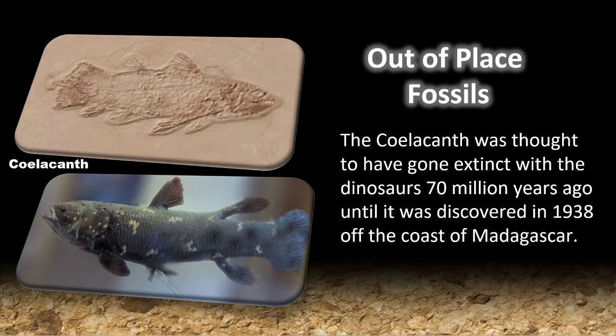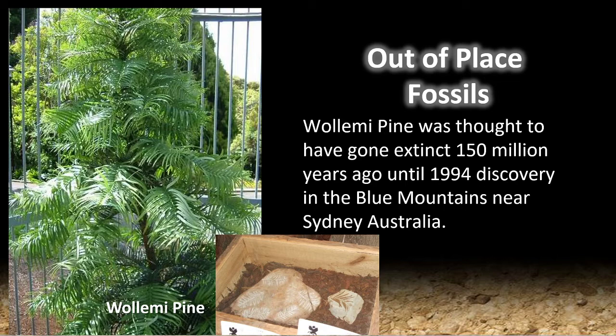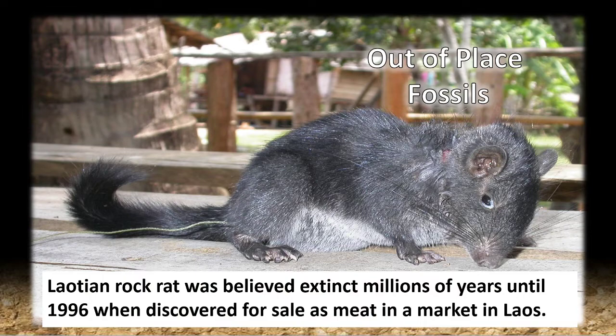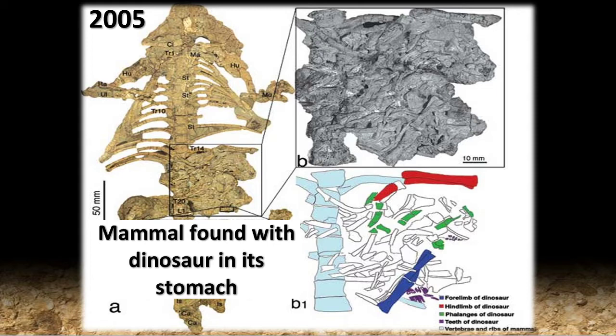Fossils are frequently found out of place, often by millions of years. The coelacanth predates the dinosaurs by millions of years and was once thought to have gone extinct 70 million years ago, until it was discovered alive and well living deep in the Indian Ocean off the coast of Madagascar. The Wollemi pine was discovered in 1994 in the Blue Mountains near Sydney, Australia, thought to have been extinct for 150 million years. The Laotian rock rat was discovered being sold as meat in a market in Laos after being thought extinct for 11 million years.